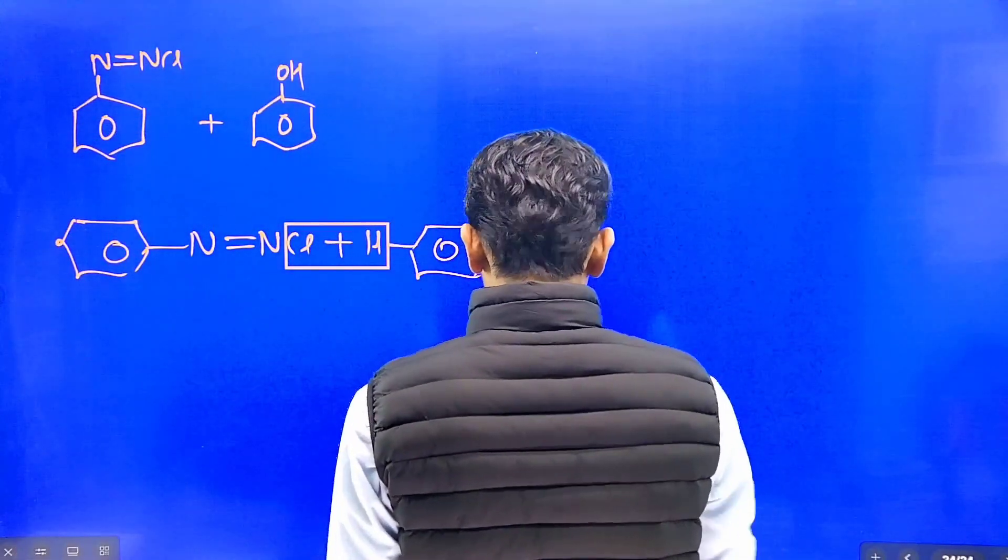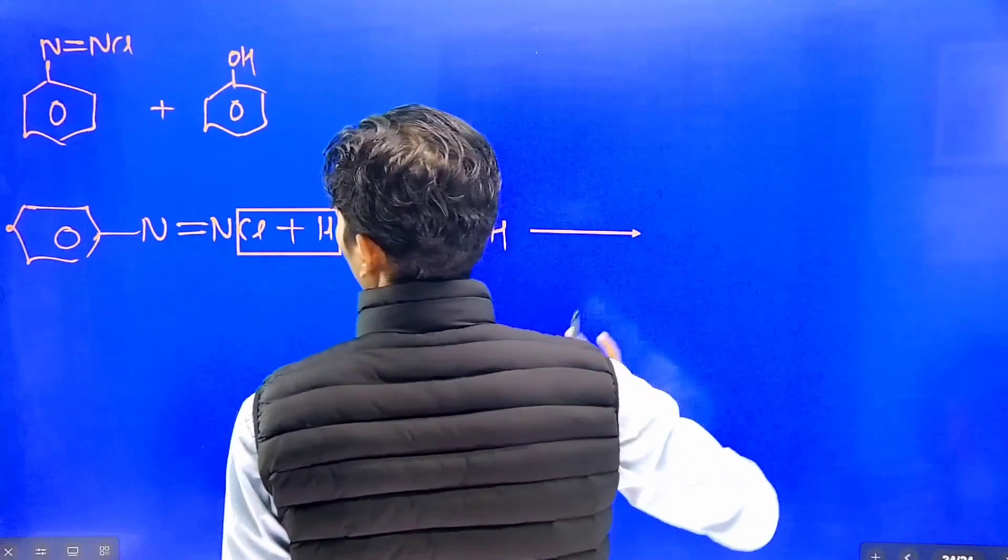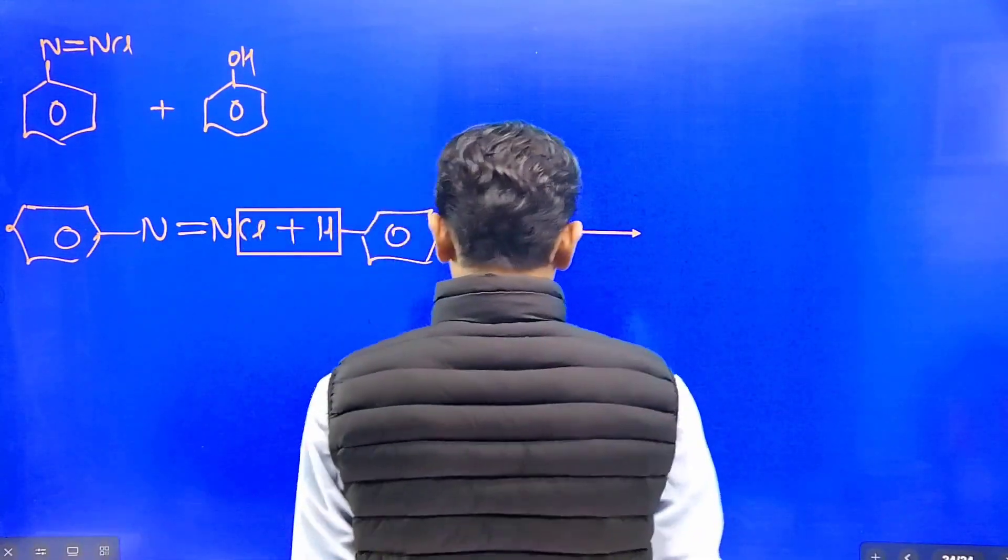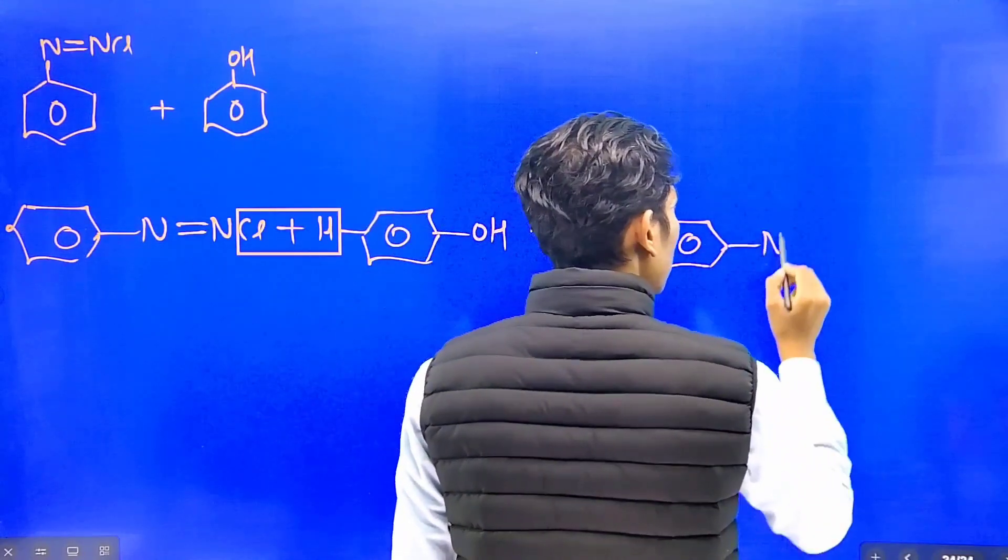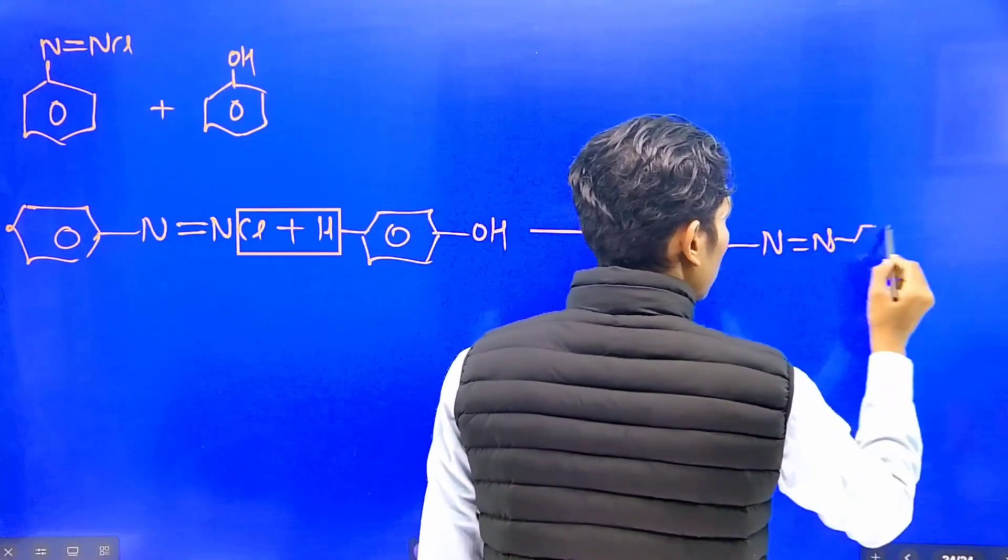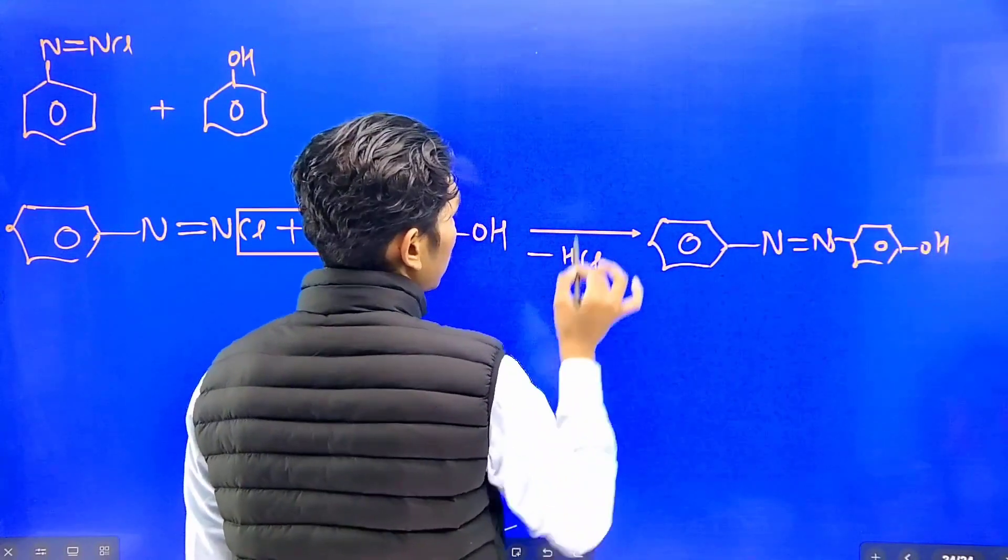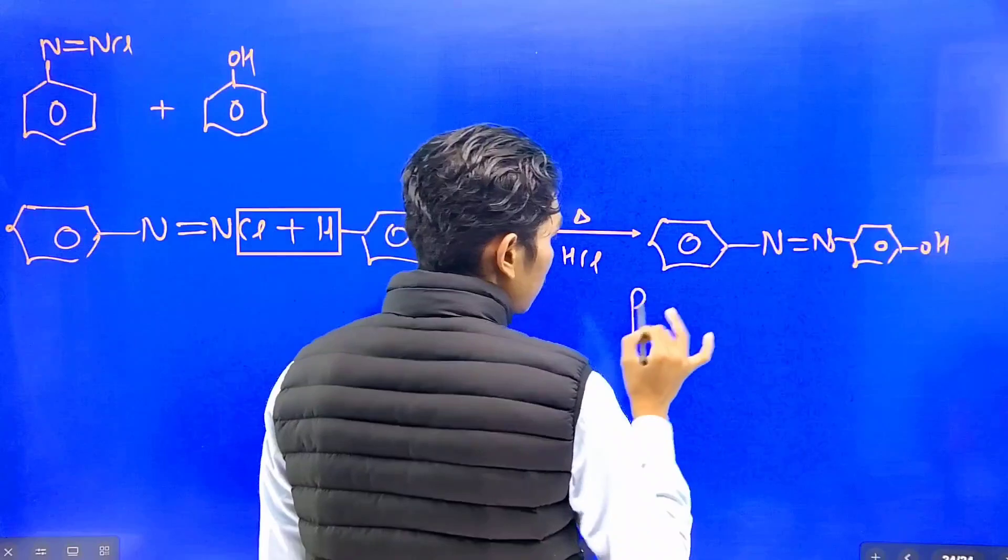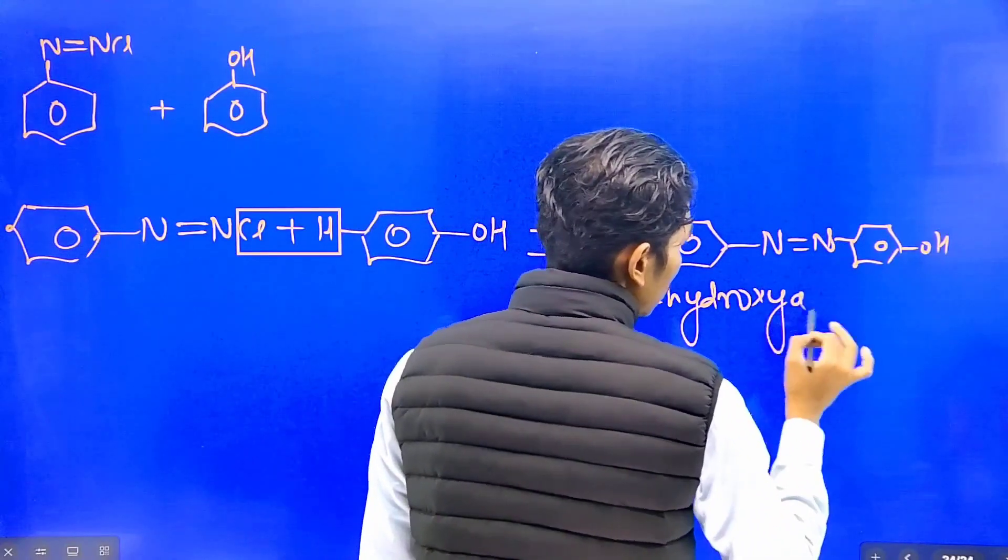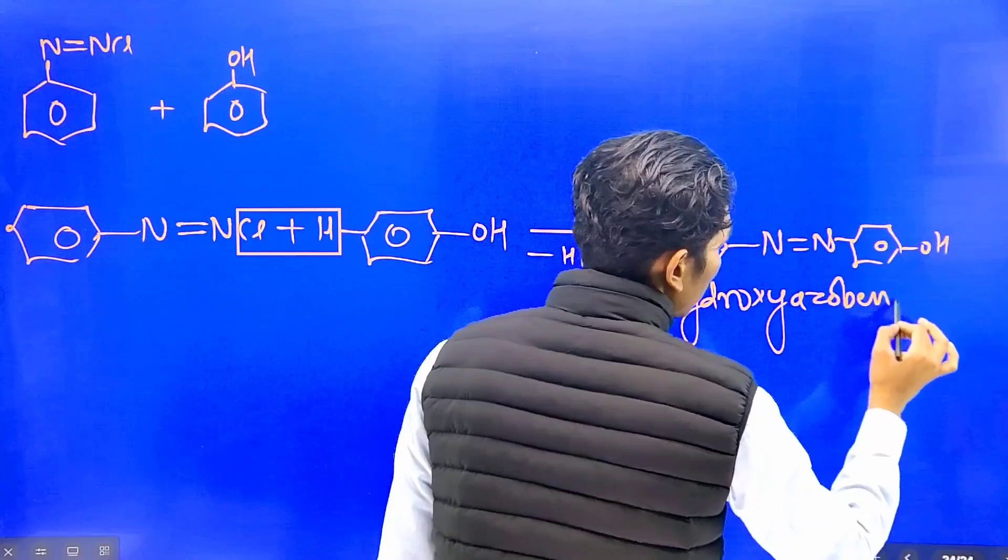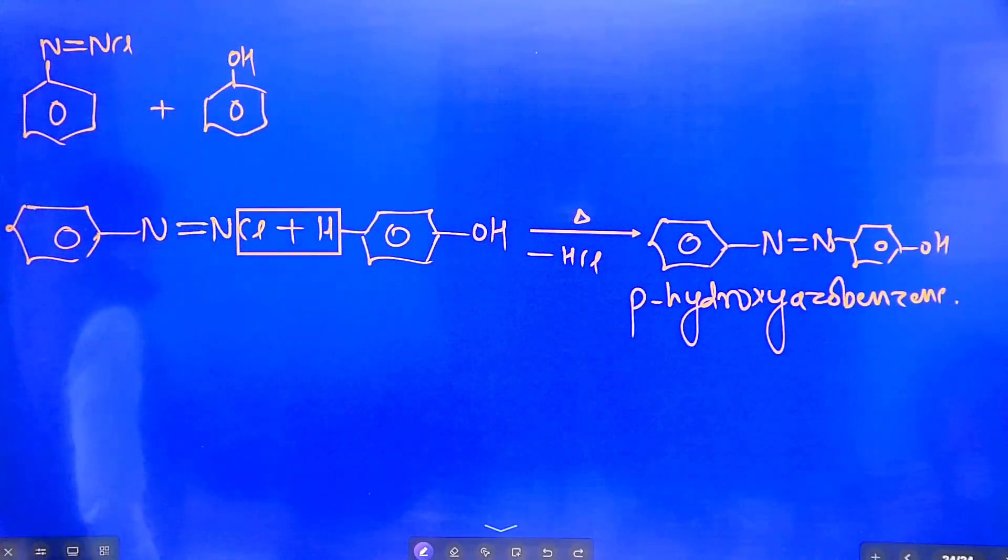In this case, when we react N double bond NCl with water and heat it, minus HCl is removed, and that gives para-hydroxy benzene, which is phenol.